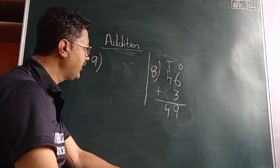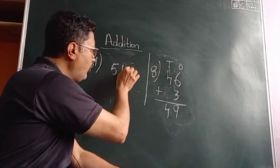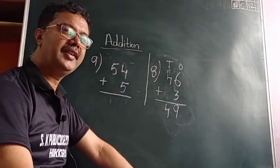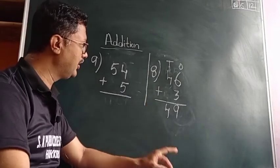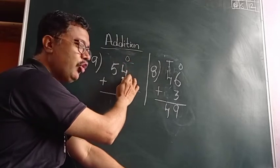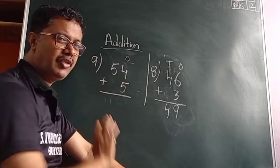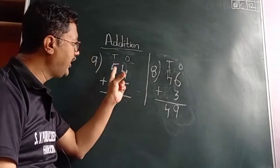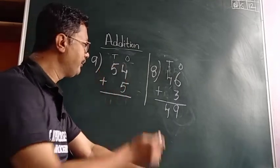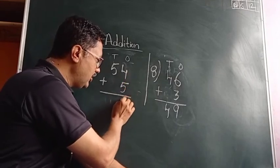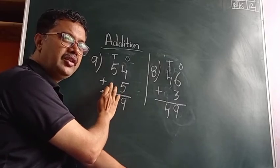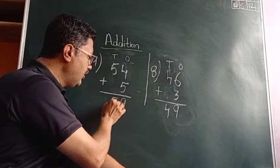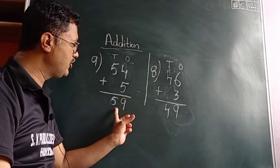Next example: 54 plus 5. The same logic applies. The upside number four and downside five are both in the ones place, so you add them: four plus five is equal to nine. For the tens place, consider the downside as zero. Five plus zero is equal to five.